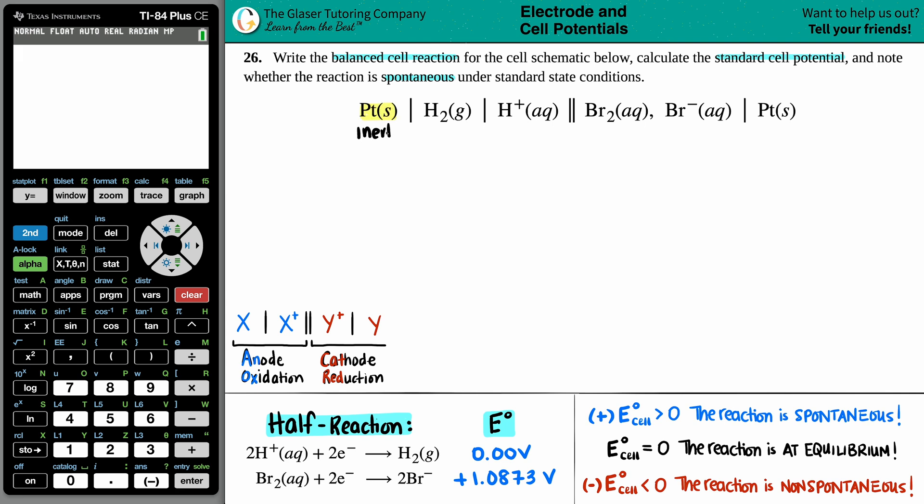As far as the platinum goes, though, this is an inert electrode, I-N-E-R-T. And that just means that it does not exist on the balanced equation when we do write that cell reaction. So goodbye to this. I don't need it for the cell reaction and for my standard cell potential. Goodbye to this as well.